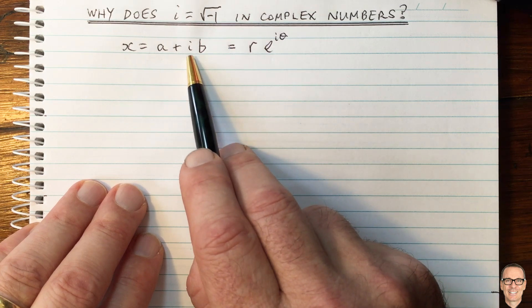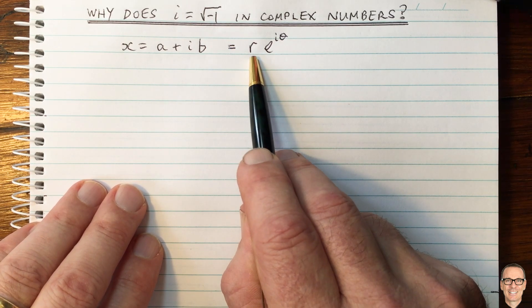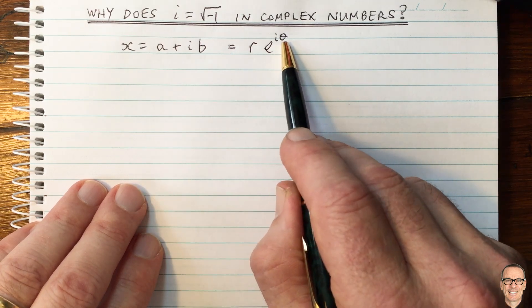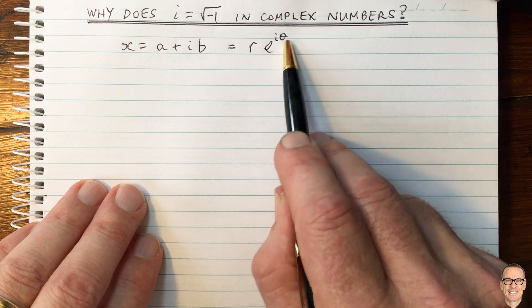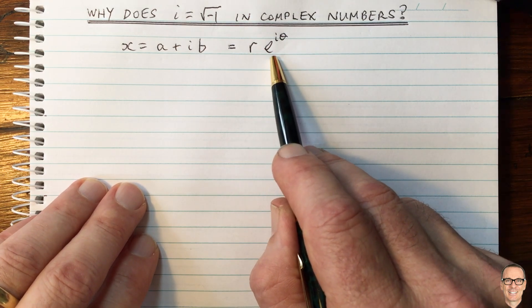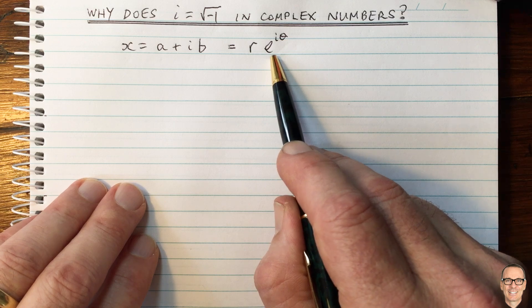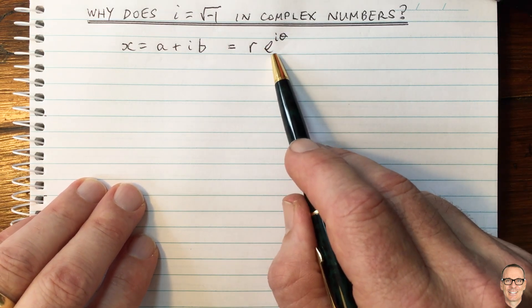We can rewrite it in polar form, where r is the magnitude of the complex number and theta is the phase. If you're not familiar with this exponential form of writing the complex number, you'll find a link in the show notes for this video to another video that explains this exponential form for complex numbers.